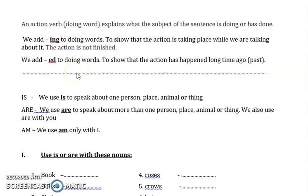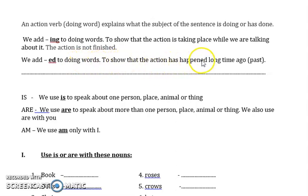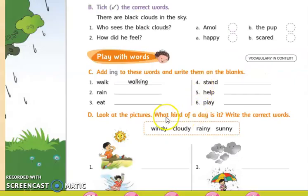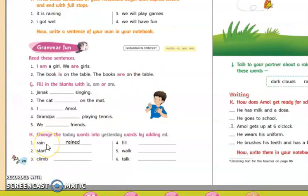Next, we will learn about when that action happened. If there is an -ing at the end of the word, it means the action is not finished and it is taking place while we are talking. If there is -ed added to the verb, it means the action has happened a long time ago in the past, and the action is completed. We have done exercises for this in your English reader, adding -ing and adding -ed to make the words into yesterday words.